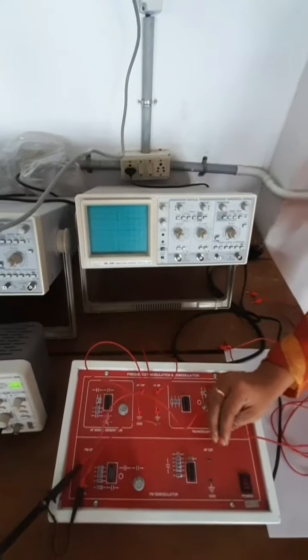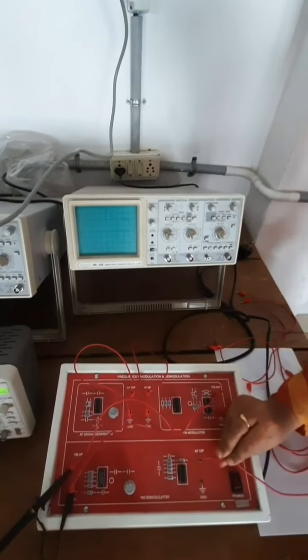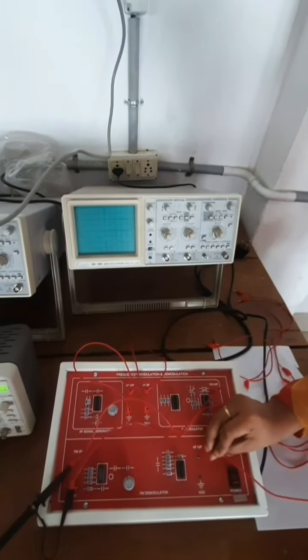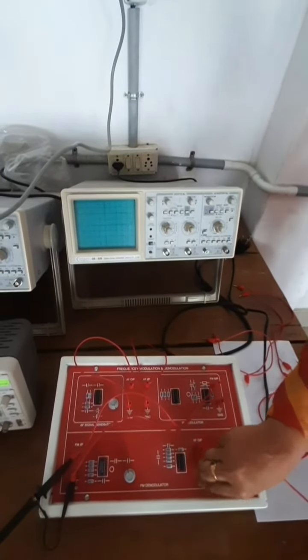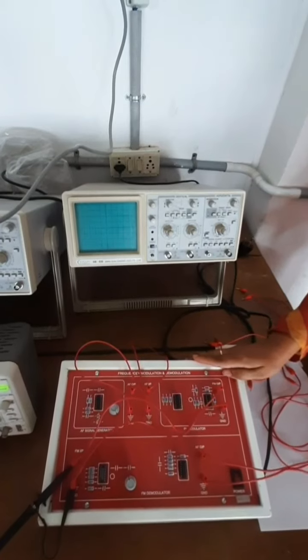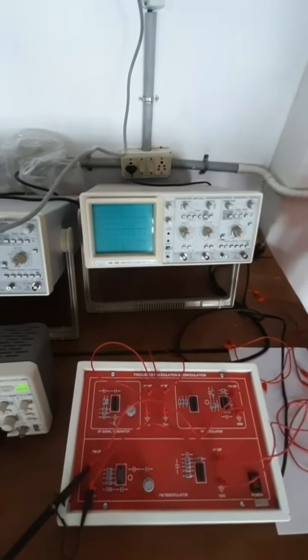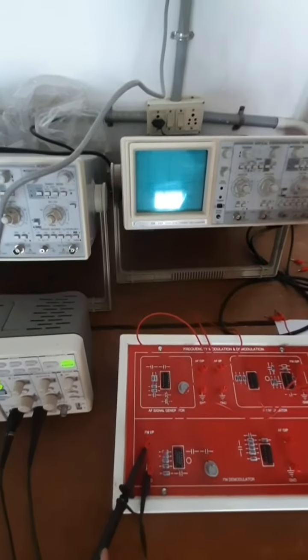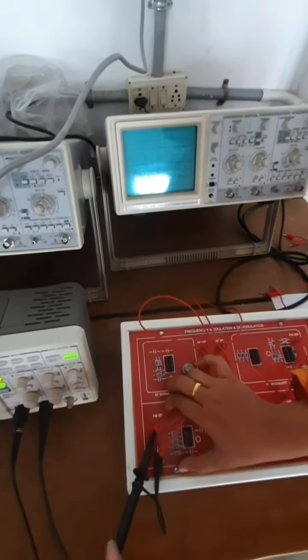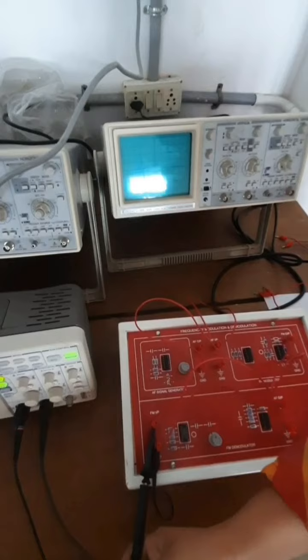The output is obtained from this point, that is AF output, which is the original message signal. To see the waveform in the DSO, we have to connect channel 2 of the DSO to the input of FM demodulator and channel 1